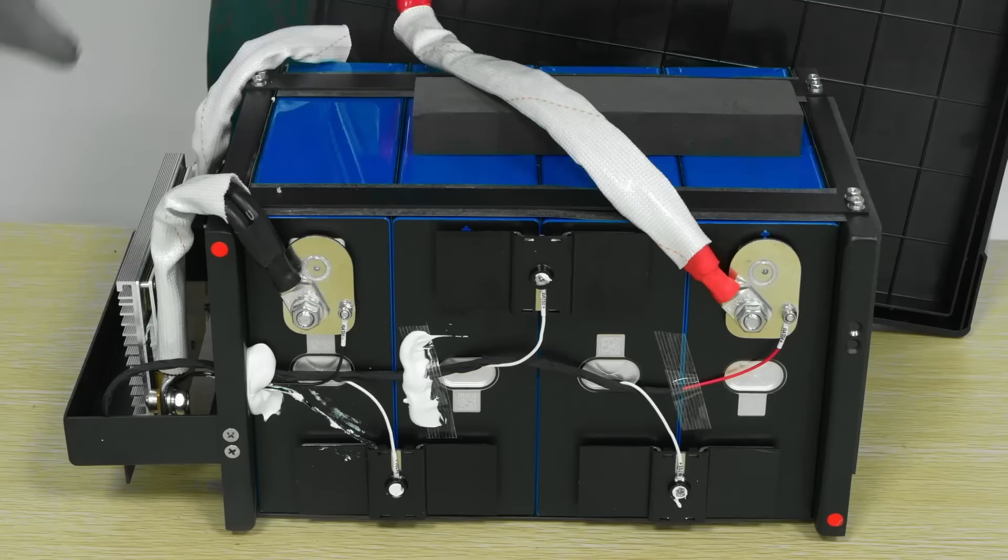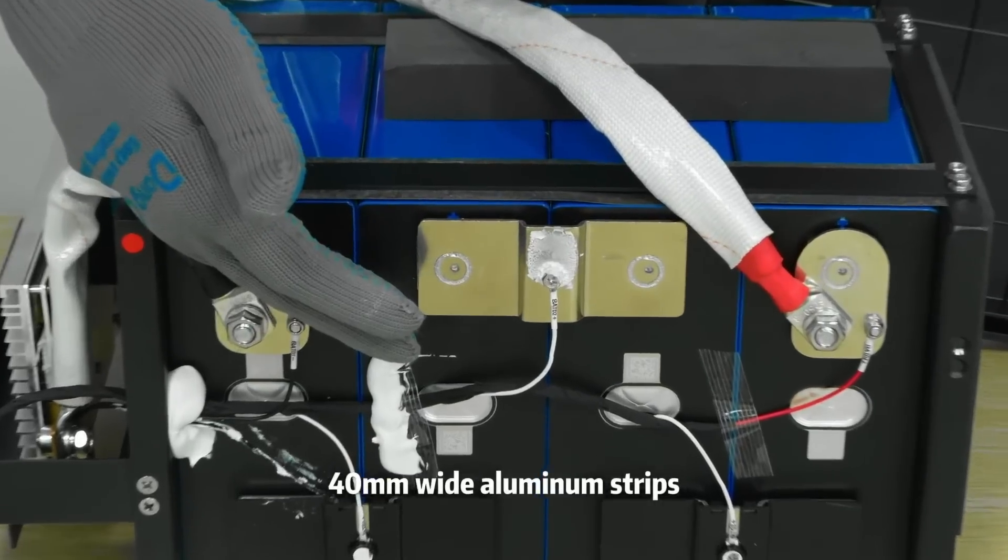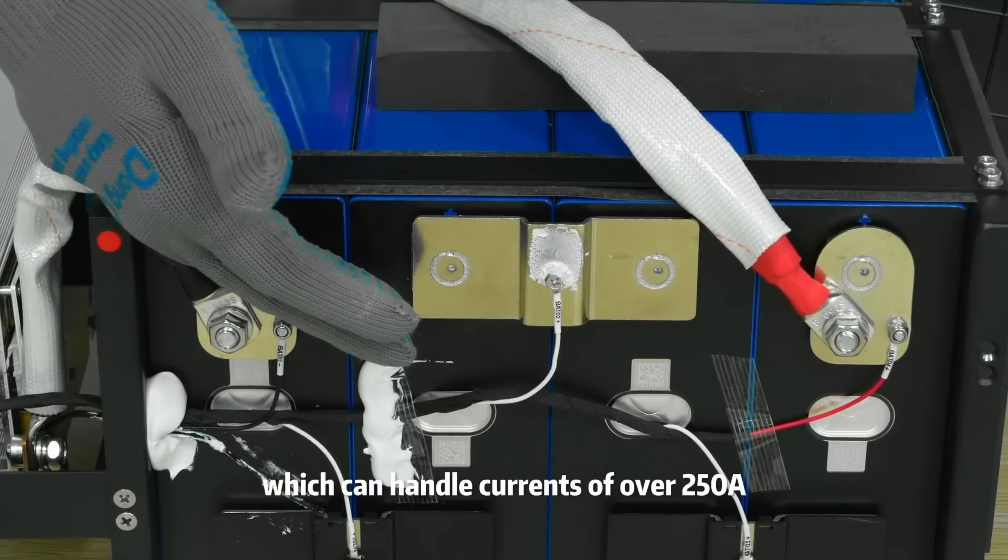Battery Cell. The cells are connected by 2-millimeter thick, 40-millimeter wide aluminum strips, which can handle currents of over 250 Amperes.